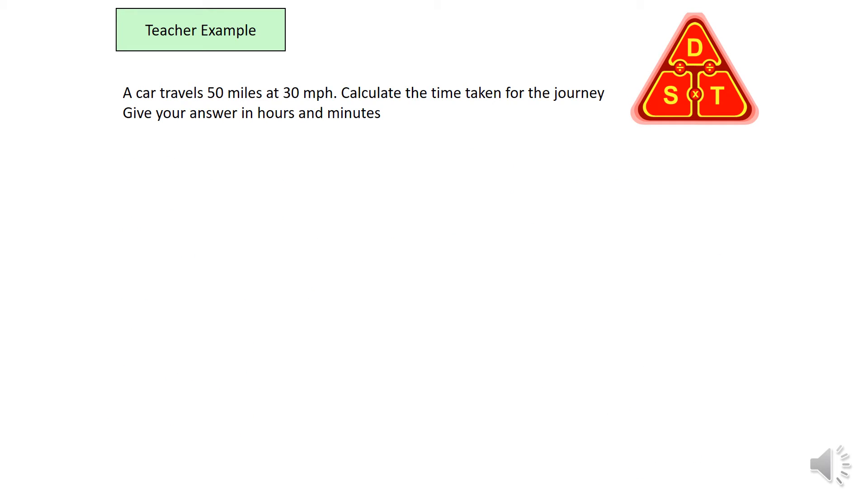Okay, let's write down S, D and T again. Write down our known information. A car travels 50 miles. That means the distance is 50 miles at 30 miles per hour.